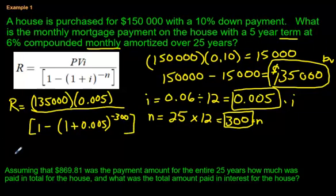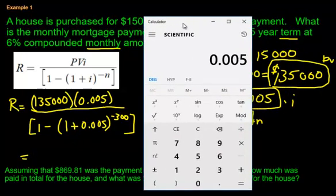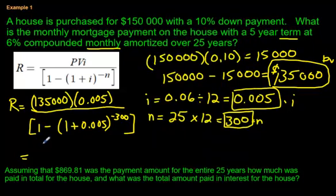To do this properly on a calculator, well, a cheaper calculator like this style here, which is kind of like the calculator you get on an iPhone, for example, it's not very fancy. So you got to be careful how you do things. So let's figure out the top and then we'll figure out the bottom. So 135,000, we're going to multiply that by 0.005. 675, not so bad.